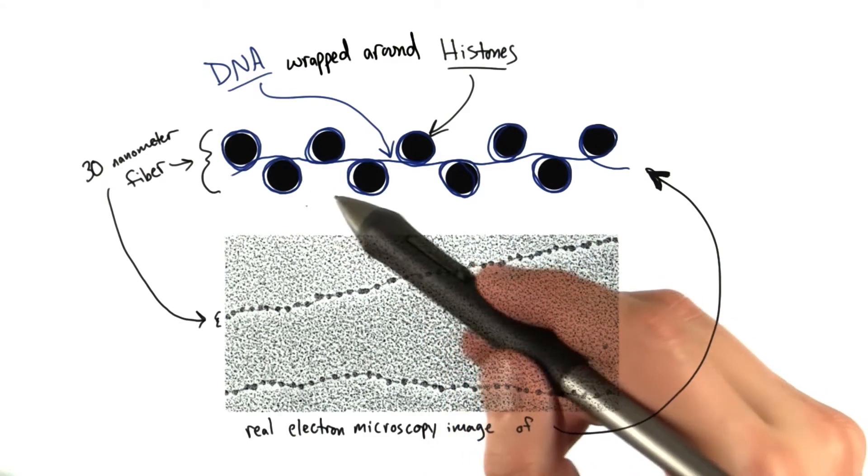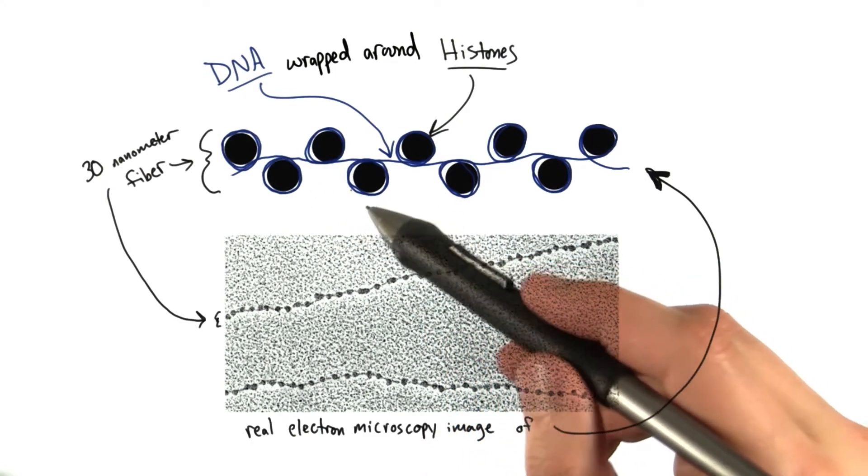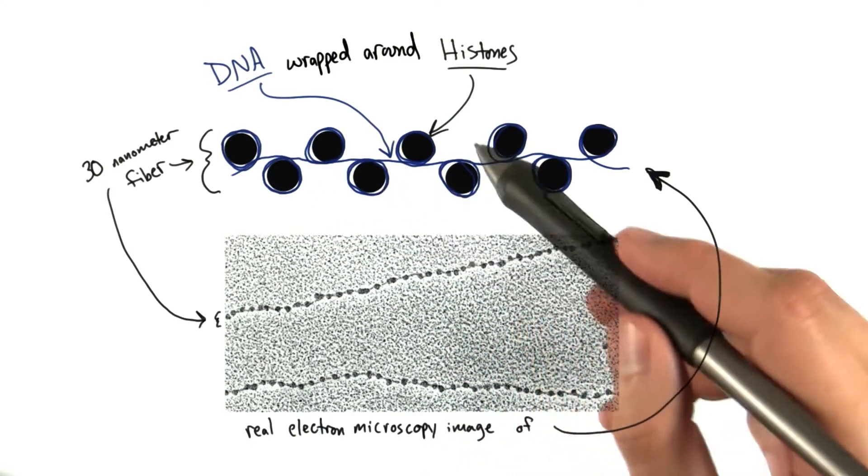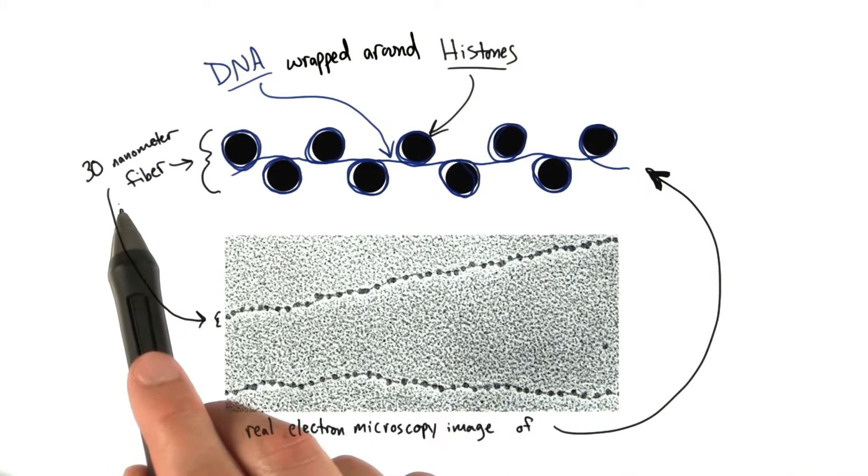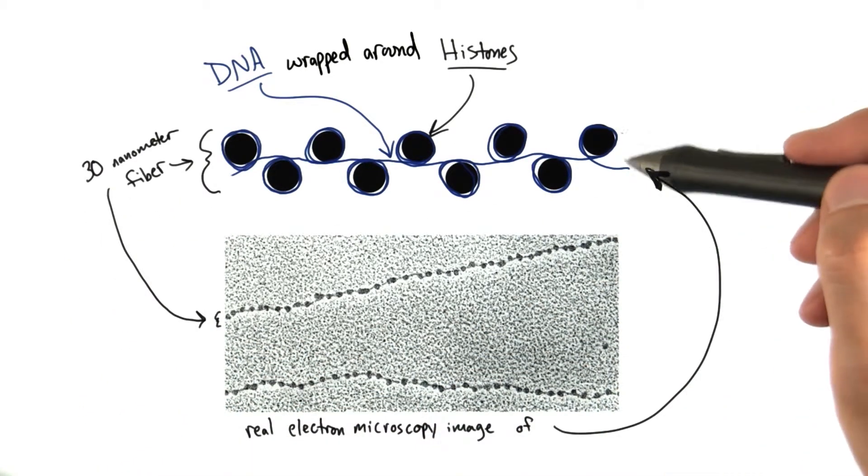This wrapping and folding leads to an intermediate form of organized DNA called the 30 nanometer fiber. And it's named, as you can imagine, based on its size. The width of this is actually about 30 nanometers. And that's still small, obviously.